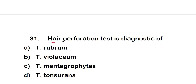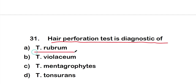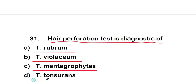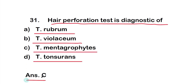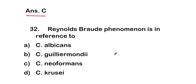Question 31: Perforation test is diagnostic of option A - T. rubrum, option B - T. violaceum, option C - T. mentagrophytes, or option D - T. tonsurans. The right answer is option C, T. mentagrophytes. The perforation test is diagnostic of T. mentagrophytes.